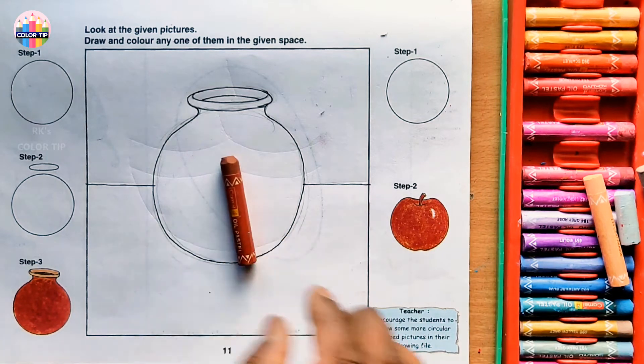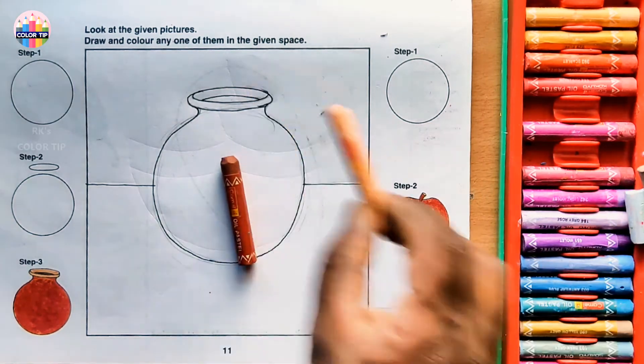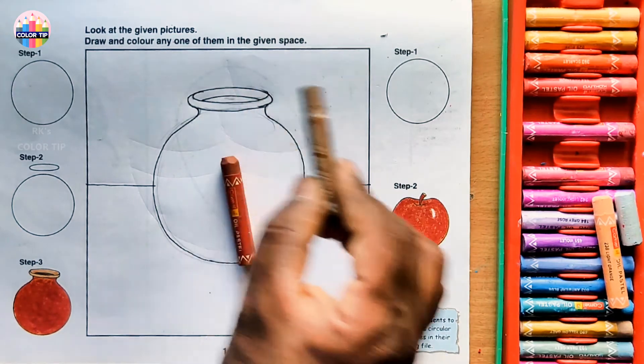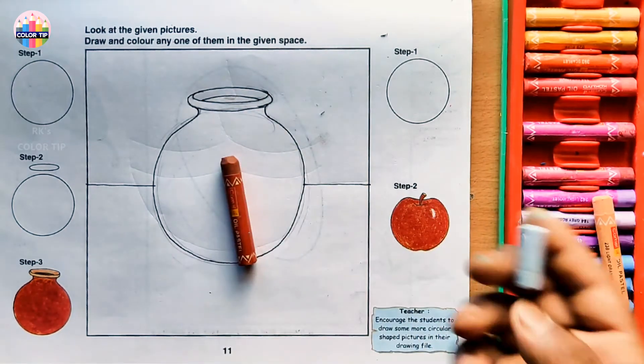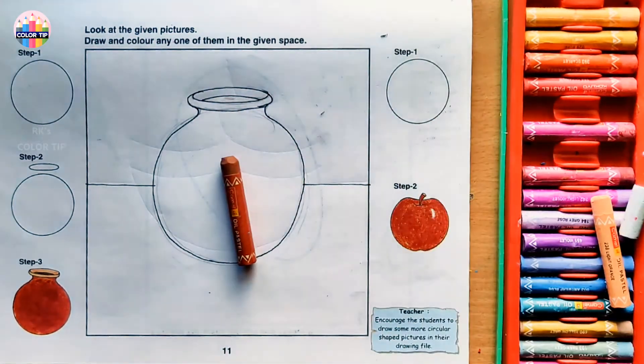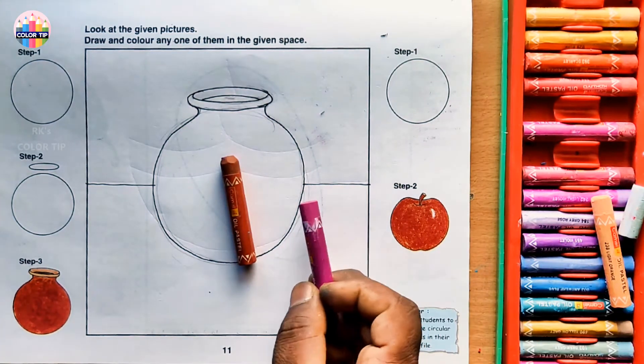Brown color for this one and skin color for this. Dark brown for this part and then background with grey color. Foreground with rose pink.